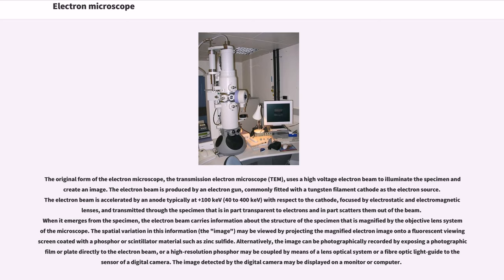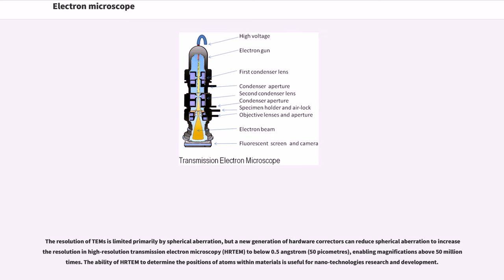The image detected by the digital camera may be displayed on a monitor or computer. The resolution of TEMs is limited primarily by spherical aberration, but a new generation of hardware correctors can reduce spherical aberration to increase the resolution in high-resolution transmission electron microscopy HRTEM to below 0.5 angstrom, 50 picometers, enabling magnifications above 50 million times.